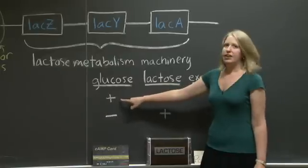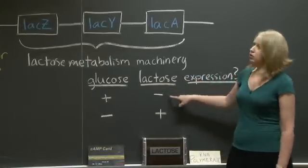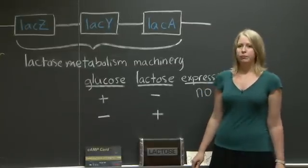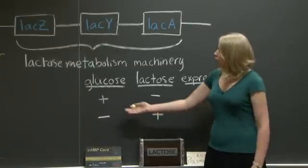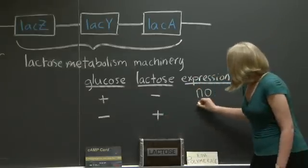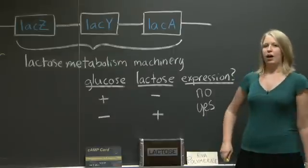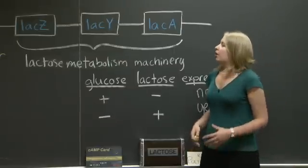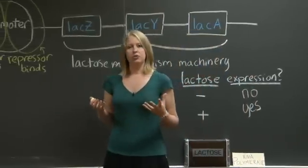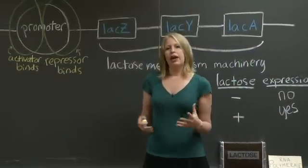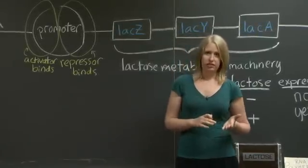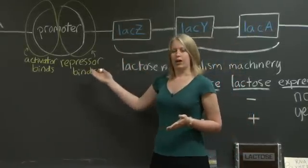When we have glucose present, but not lactose, we do not want to express the lac operon. However, when we remove glucose and we add lactose, we do want to express the lac operon. Now, we've covered when the E. coli would like to express this operon. However, how can it express this operon only when it wants to and not when it doesn't? That's where the promoter comes into play.